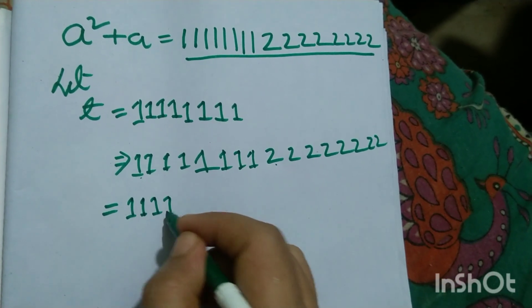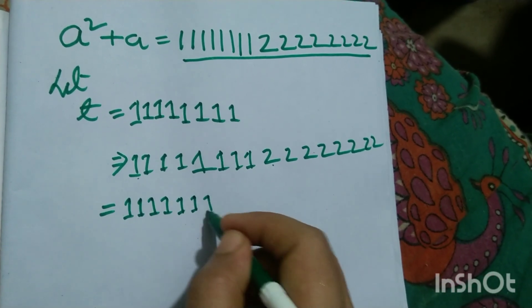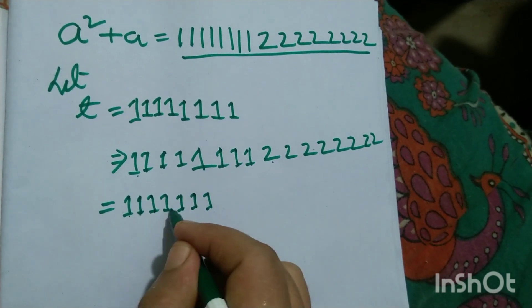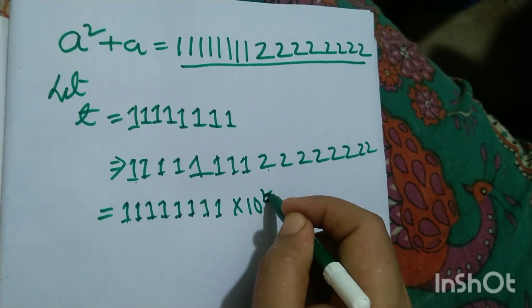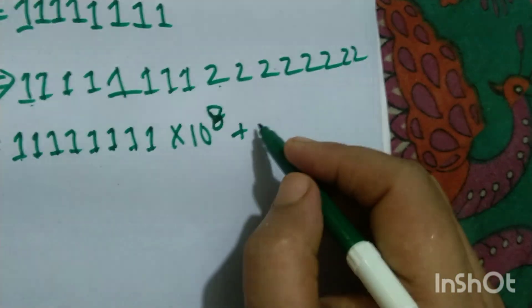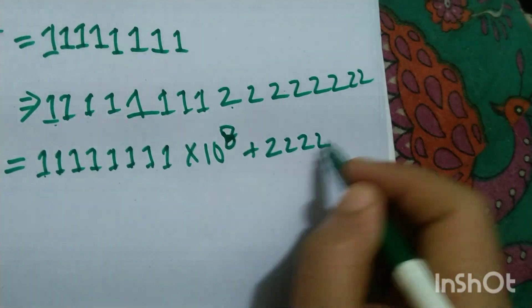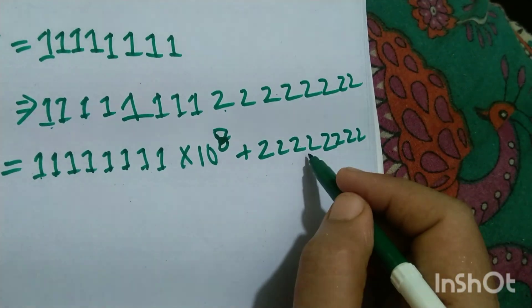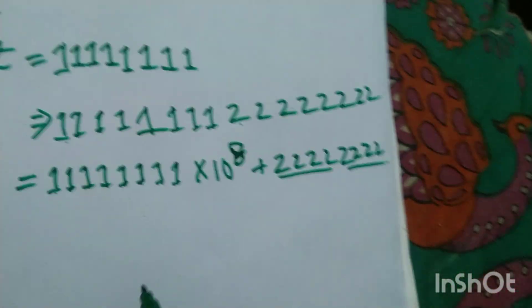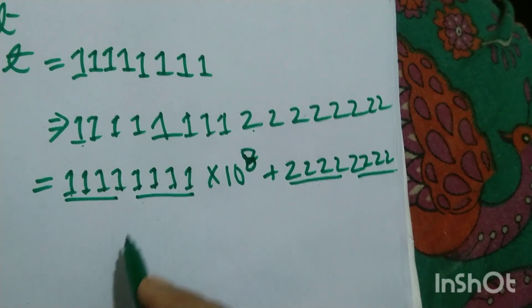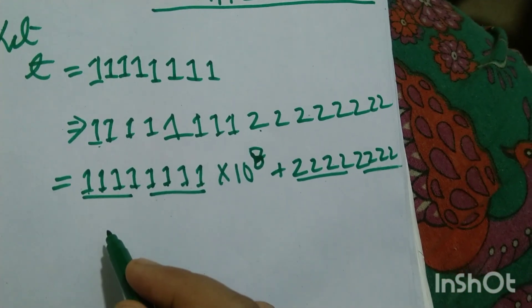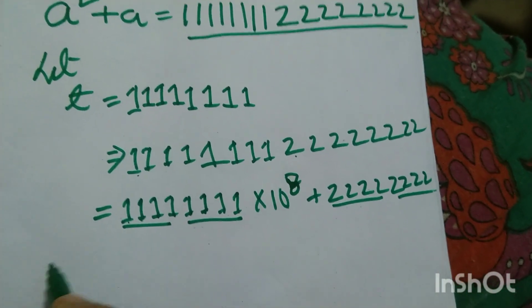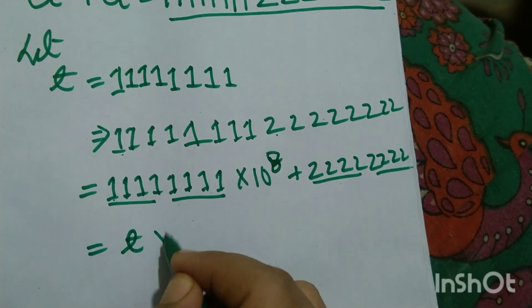So this element can be written as 1 1 1 1 1 1 1 1 — that is 8 ones — into 10 to the power 8, plus 2 2 2 2 2 2 2 2. Now 10 to the power 8, so it can be written as t into 10 to the power 8.